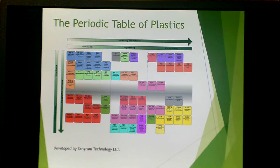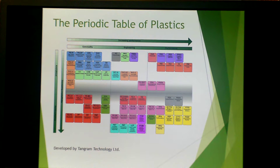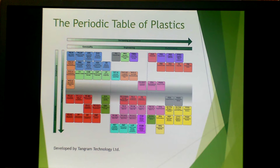This is a periodic table of plastics. It shows the relationship between crystallinity and what types of polymers there are, and is provided here for your reference.